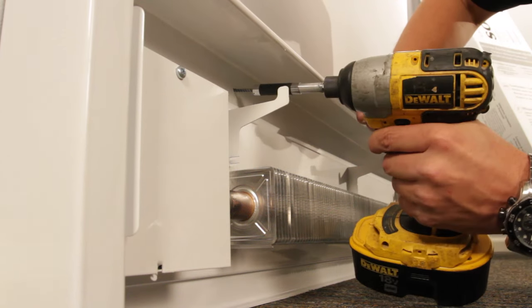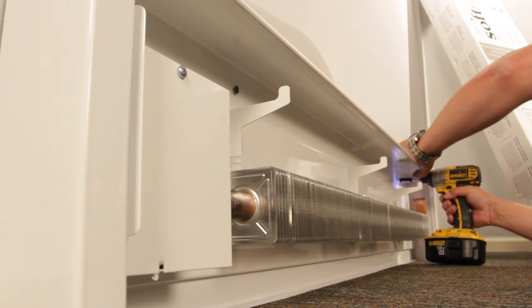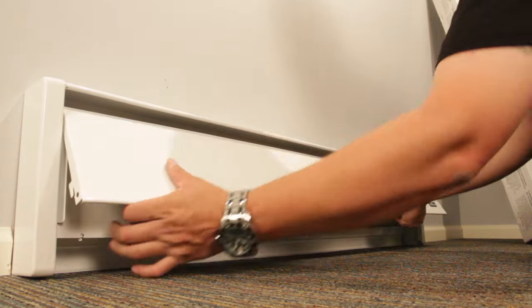Now using the holes that you pre-drilled, attach the soft heat to the wall, making sure that you have solid contact with the wall studs. Now just reattach the soft heat cover and you're done.